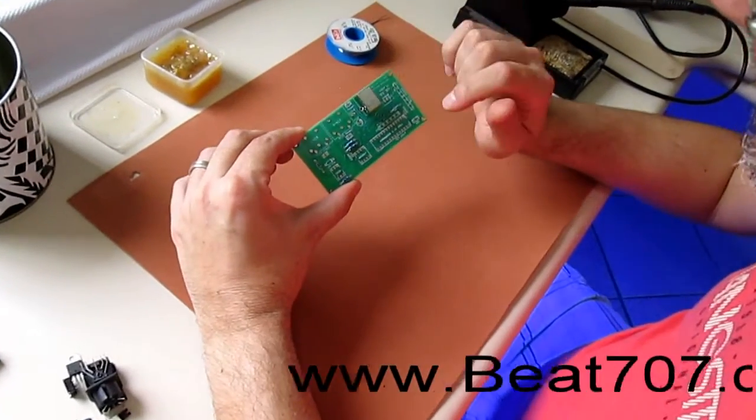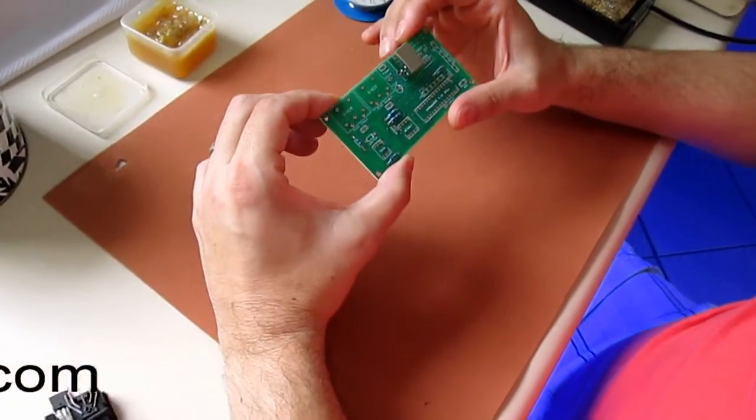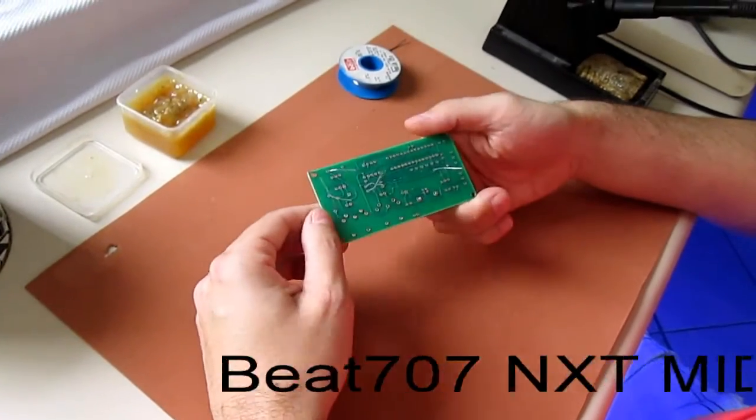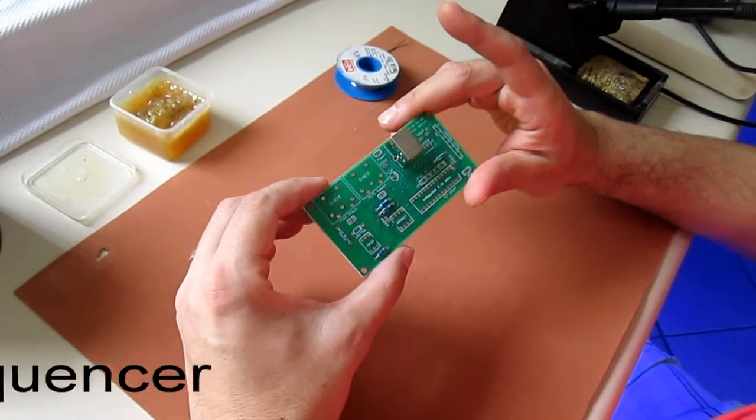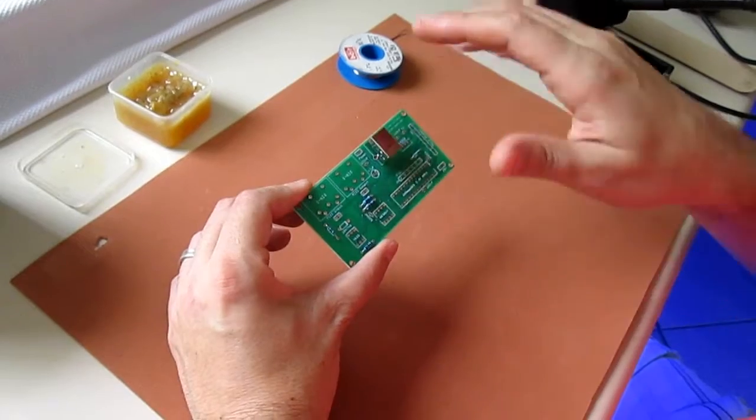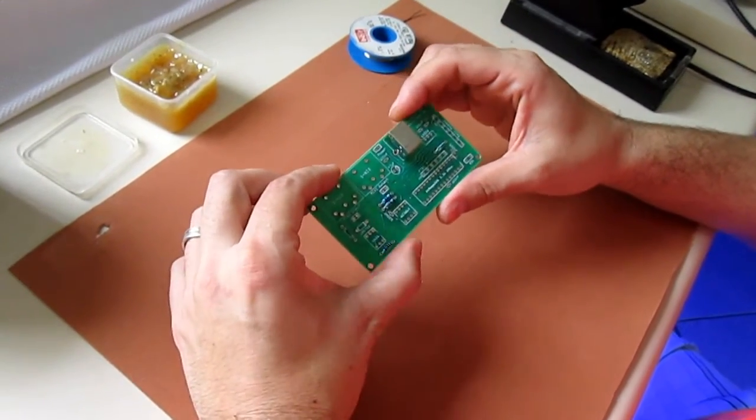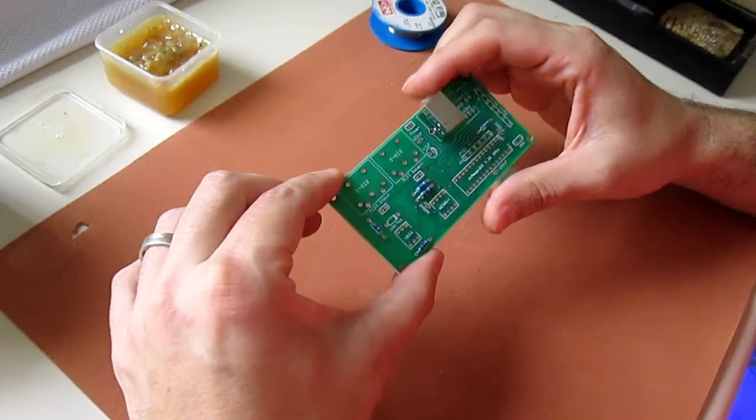Okay guys, so this is the Beat 707 Next. It's a new card I'm working on, and I'm just going to solder everything on the card very quickly so you have an idea how to work with that.